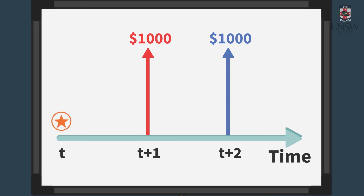In other words, when comparing those two cash flows, the blue arrow is not as valuable as the red, because it is paid later. An equivalent blue cash flow at time t plus one could be, say, $900.